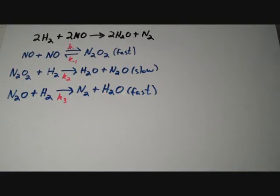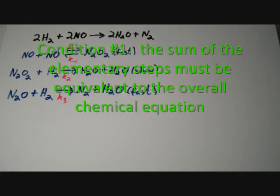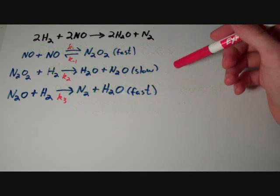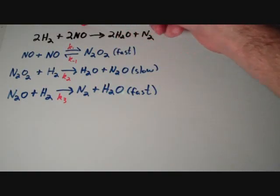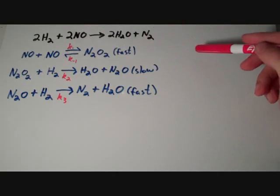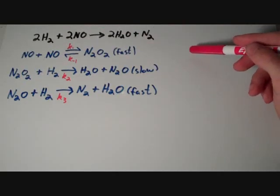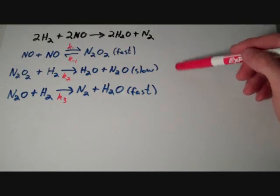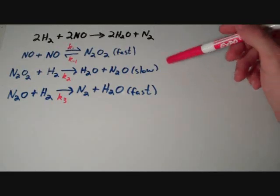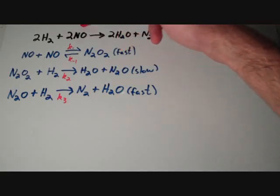So, the first thing we need to do is review the conditions that must be met for a mechanism to be valid. The first condition is that the sum of the elementary steps must be equivalent to the overall chemical equation. So, if I add these three steps together, will I get this overall equation up here? If you need to, pause the video and sum up the steps and just reassure yourself that they do indeed add up to this top equation.